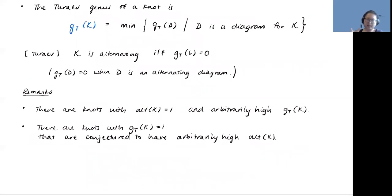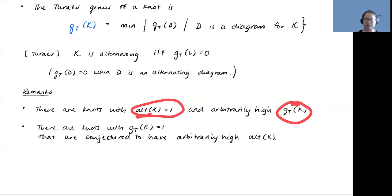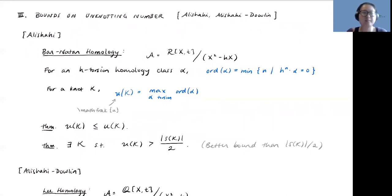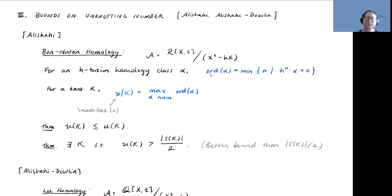Comparing Turaev genus with alternation number: we know of knots with alternation number one but arbitrarily high Turaev genus, and there are also knots with Turaev genus one where people have conjectured arbitrarily high alternation numbers. So these really are different measurements of distance from alternating. Now let's talk about the papers that motivated our results. In Alishahi's paper, as well as Alishahi-Dowlin's papers, the idea is to use the algebraic actions on Khovanov homology to give bounds on unknotting number.